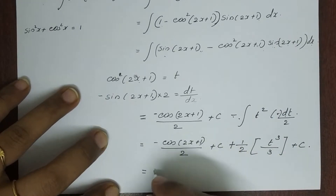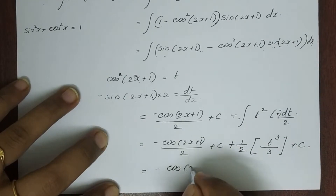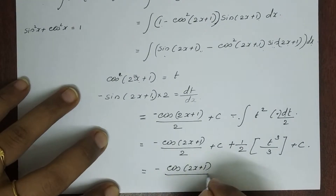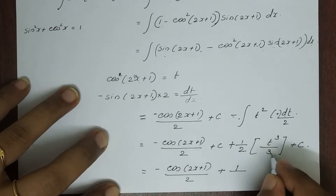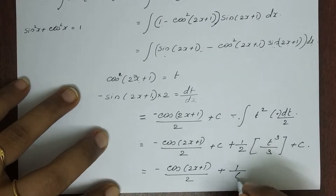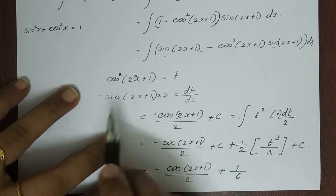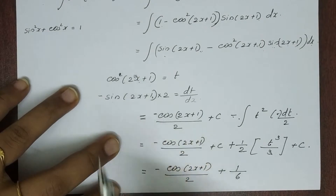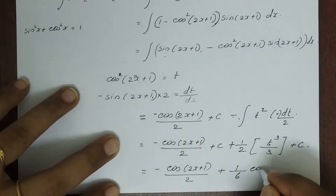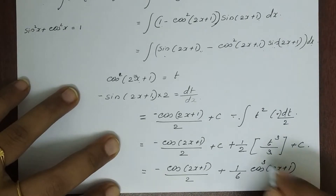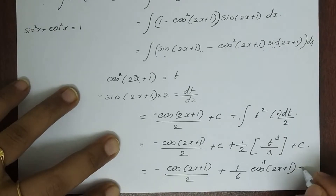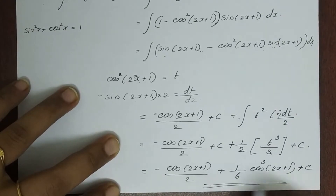Integrating t² gives t³/3. So the final answer is minus cos(2x+1) divided by 2, plus (1/6) cos³(2x+1) plus c.